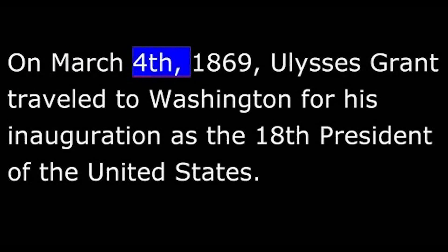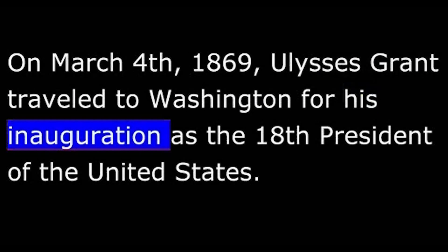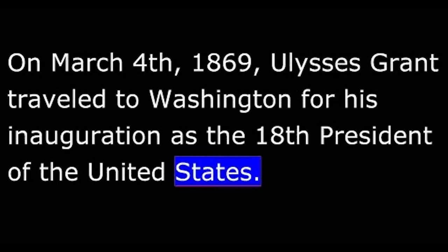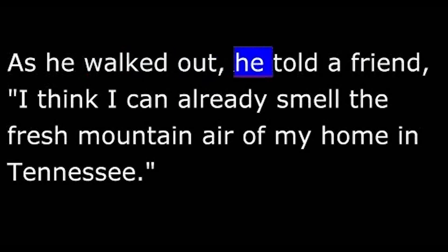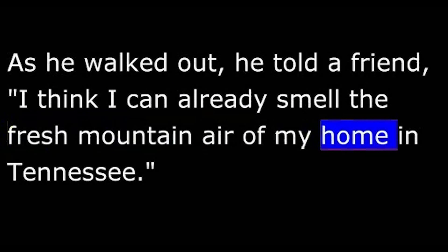On March 4, 1869, Ulysses Grant traveled to Washington for his inauguration as the 18th President of the United States. Outgoing President Andrew Johnson refused to take part in the ceremony. Before Grant arrived, Johnson left the White House. As he walked out, he told a friend, "I think I can already smell the fresh mountain air of my home in Tennessee."